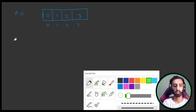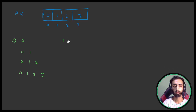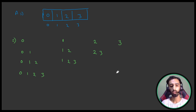All the subarrays are: starting from 0 — [0], [0,1], [0,1,2], [0,1,2,3]. Starting from 1 — [1], [1,2], [1,2,3]. Starting from 2 — [2], [2,3]. And finally [3] by itself.